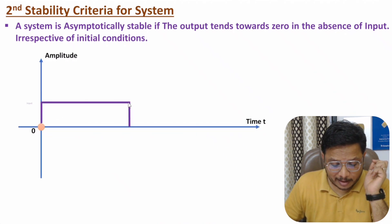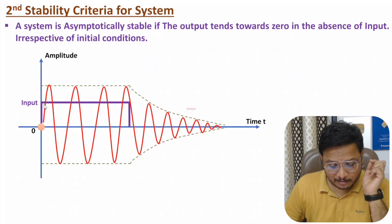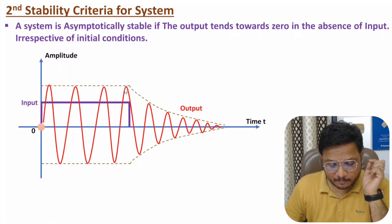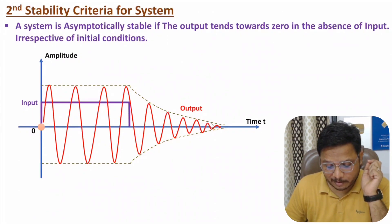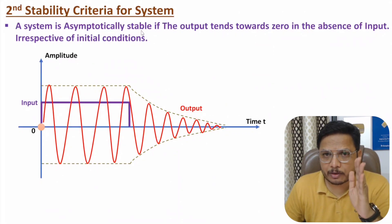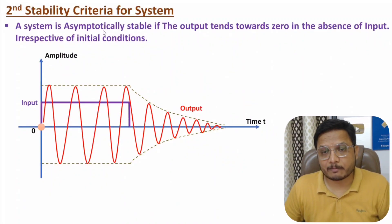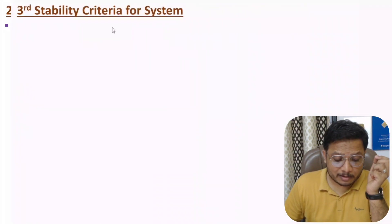Let me explain by a waveform. We have one input signal that goes to zero at some point. After the input becomes zero, the output should go towards zero as well. For example, looking at the waveform producing sinusoidal output — that is bounded — but once the input goes towards zero, the output approaches zero; it is decaying with respect to time. So one can say this system is an asymptotically stable system.